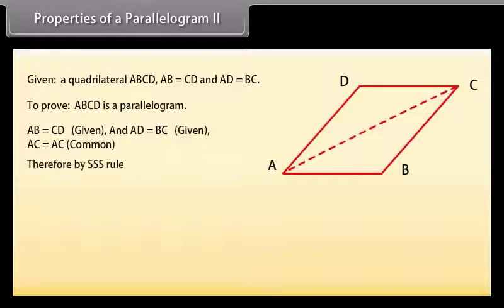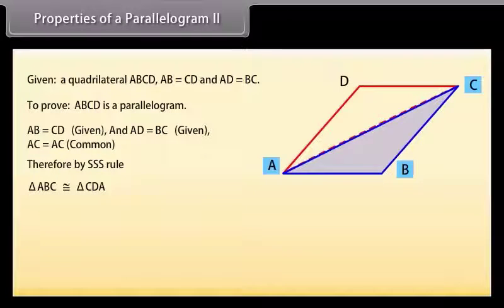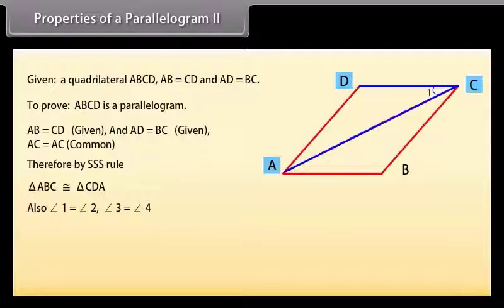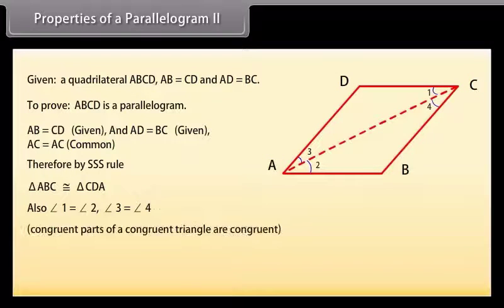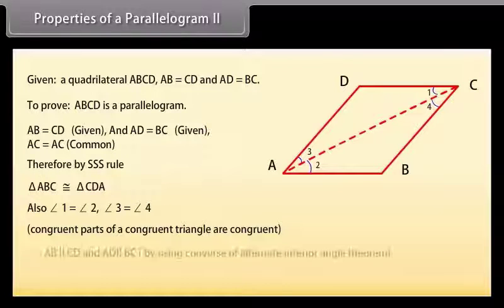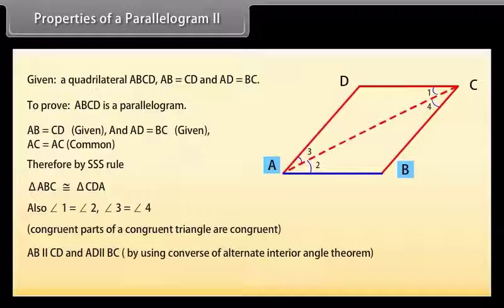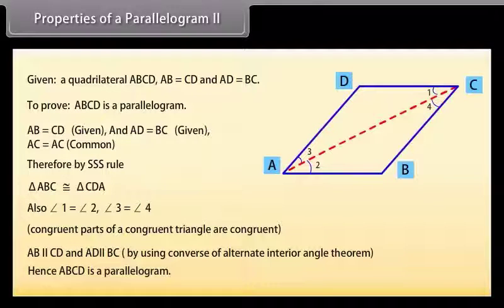Also angle 1 = angle 2 and angle 3 = angle 4 because congruent parts of congruent triangles are congruent. Therefore AB is parallel to CD and AD is parallel to BC. Hence ABCD is a parallelogram.